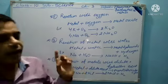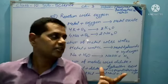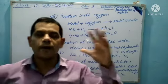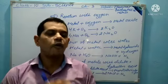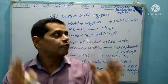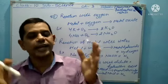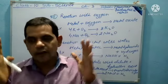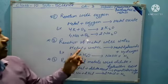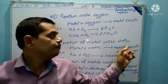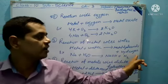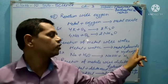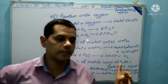Now the second reaction is the reaction of metal with water. When reacting with water, metals form hydroxide and hydrogen gas. That is, metal plus water produces metal hydroxide plus hydrogen.